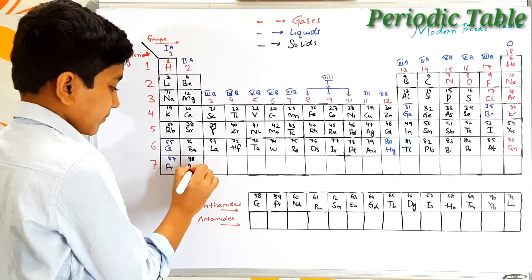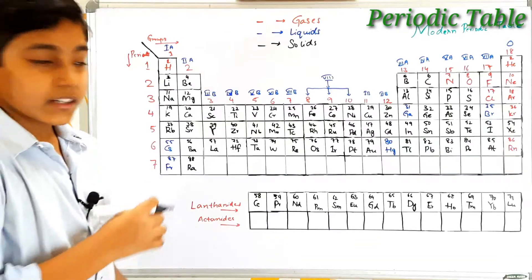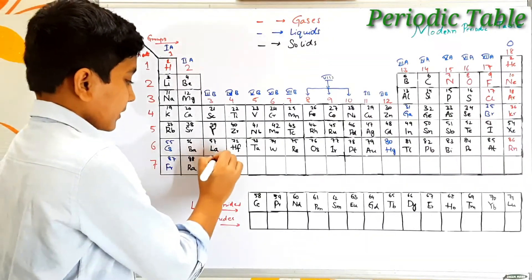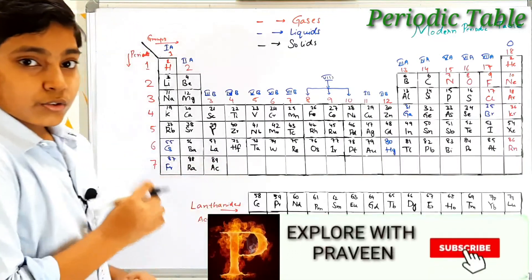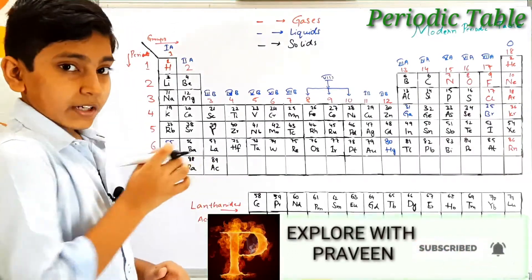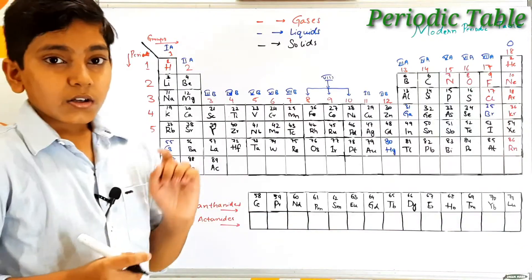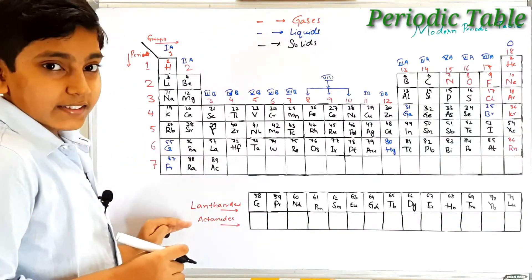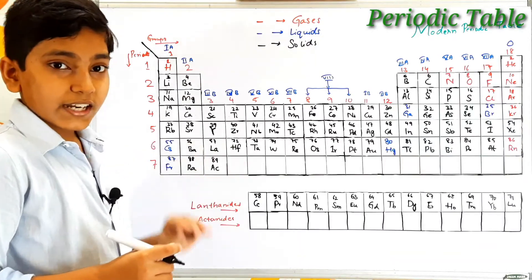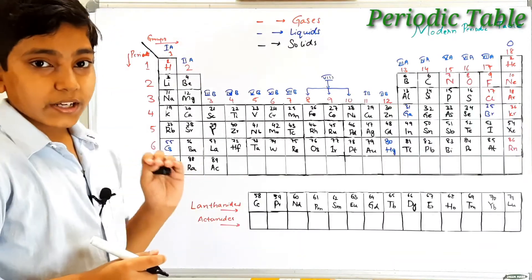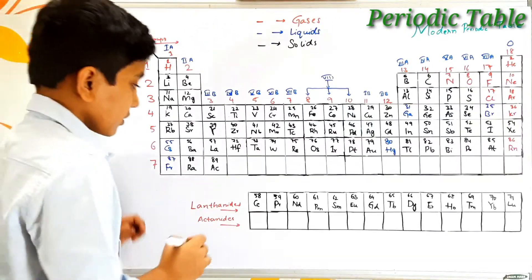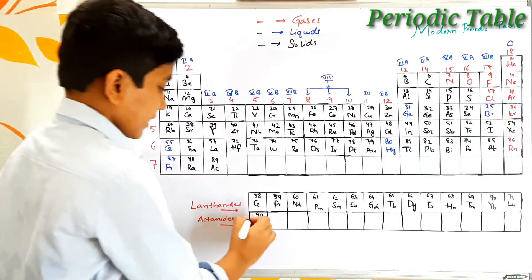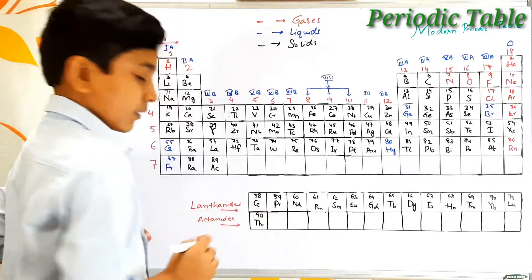Atomic number 89 is actinium. Continuing from actinium we find the actinide series, which is found below the lanthanide series. The actinide series begins with atomic number 90 which is thorium — its symbol is Th. Atomic number 91 is protactinium — its symbol is Pa, and atomic number 92 is uranium.